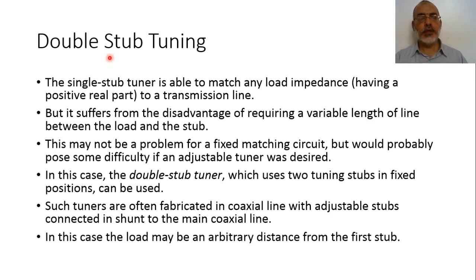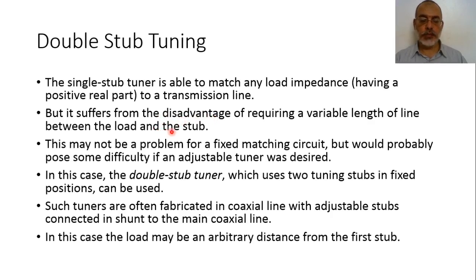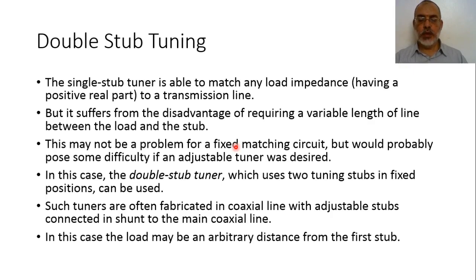The single stub tuner is able to match any load impedance having a positive real part to a transmission line, but it suffers from the disadvantage of requiring a variable length of line between the load and the stub according to the load. This may not be a problem for a fixed matching circuit assuming a fixed load and fixed operating frequency, but this problem would pose some difficulty if an adjustable tuner is required.